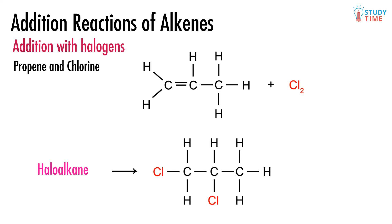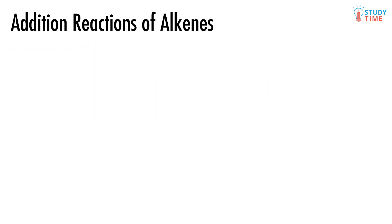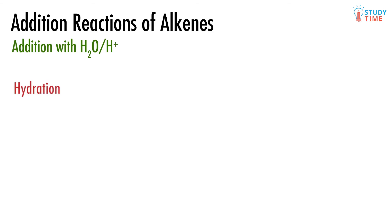Because it has more than one chlorine atom attached, we call it 1,2-dichloropropane. The next addition reaction is where we react an alkene with water — this is called hydration. It can't be just any water; it needs to be acidified water, which is why we use the symbol H₂O over H⁺ to denote it.